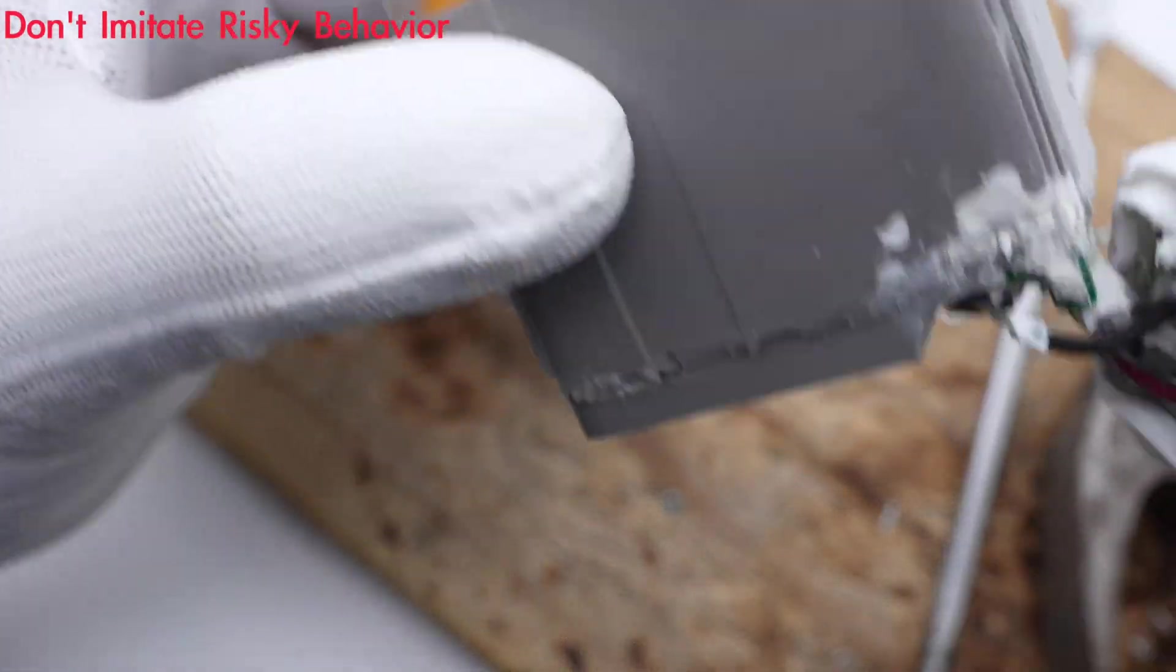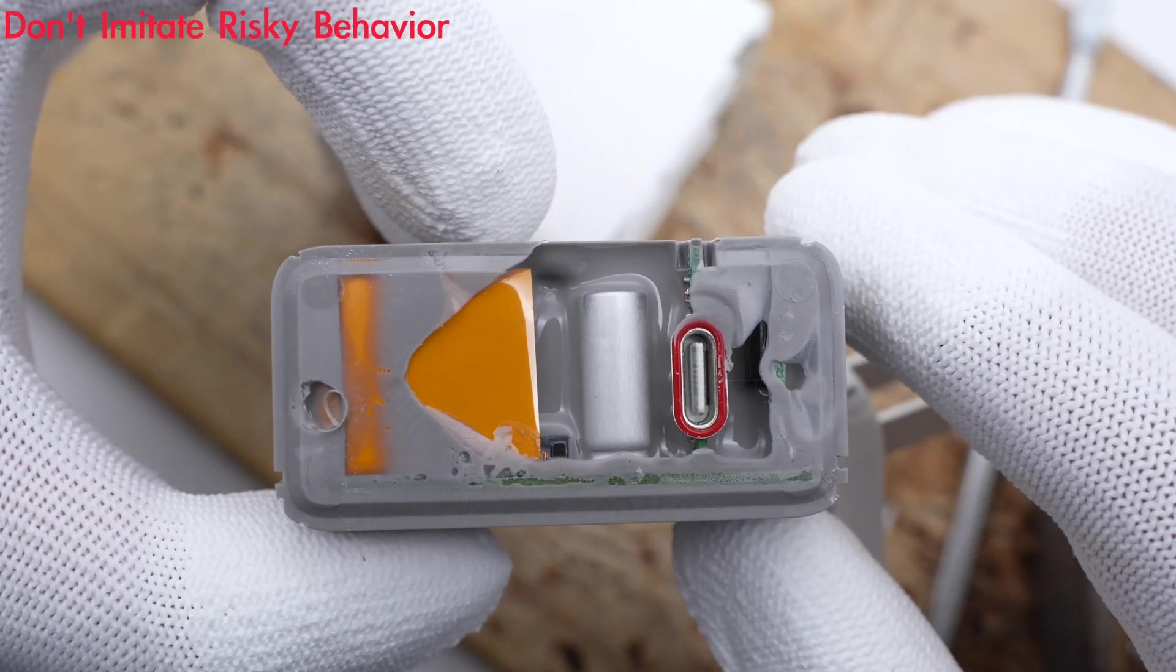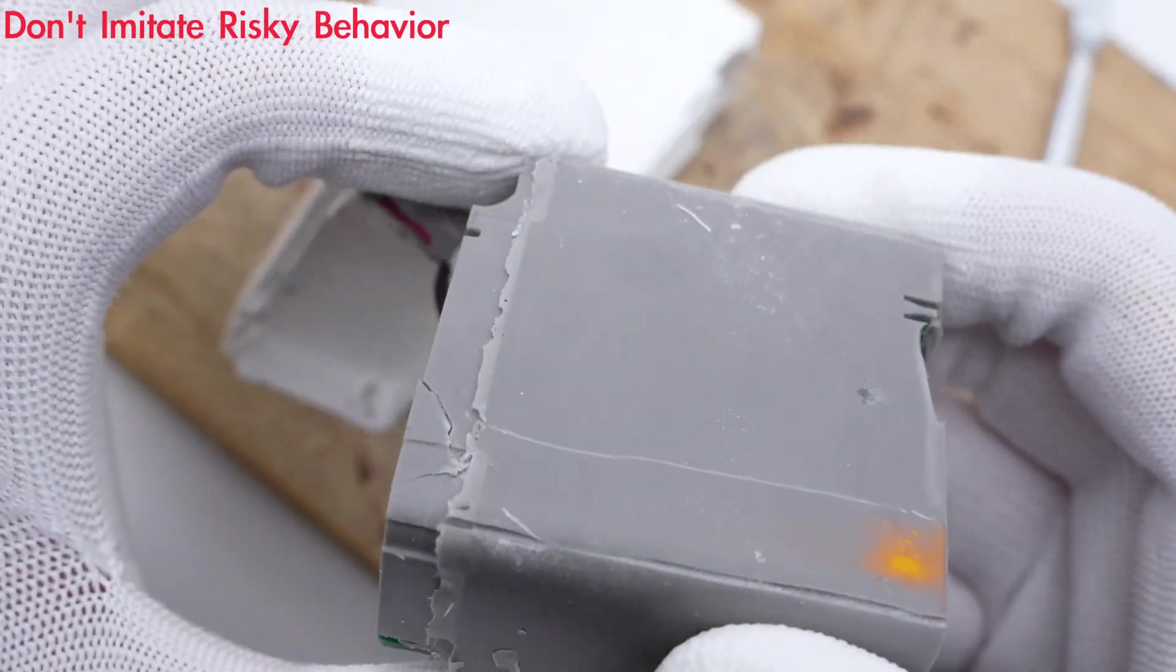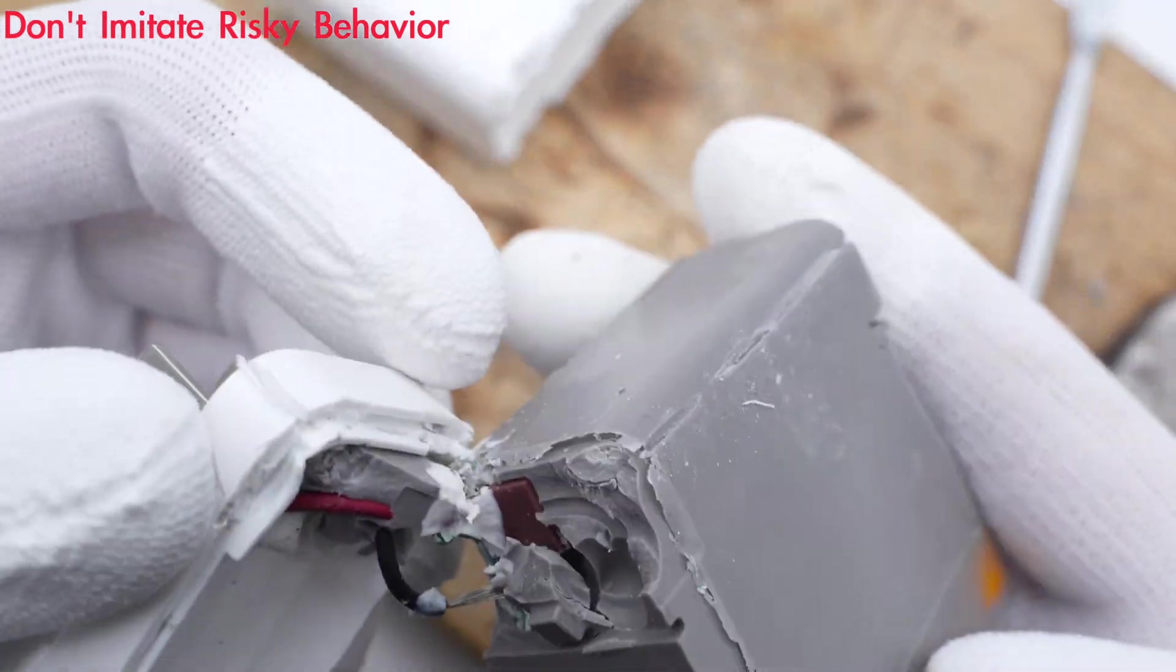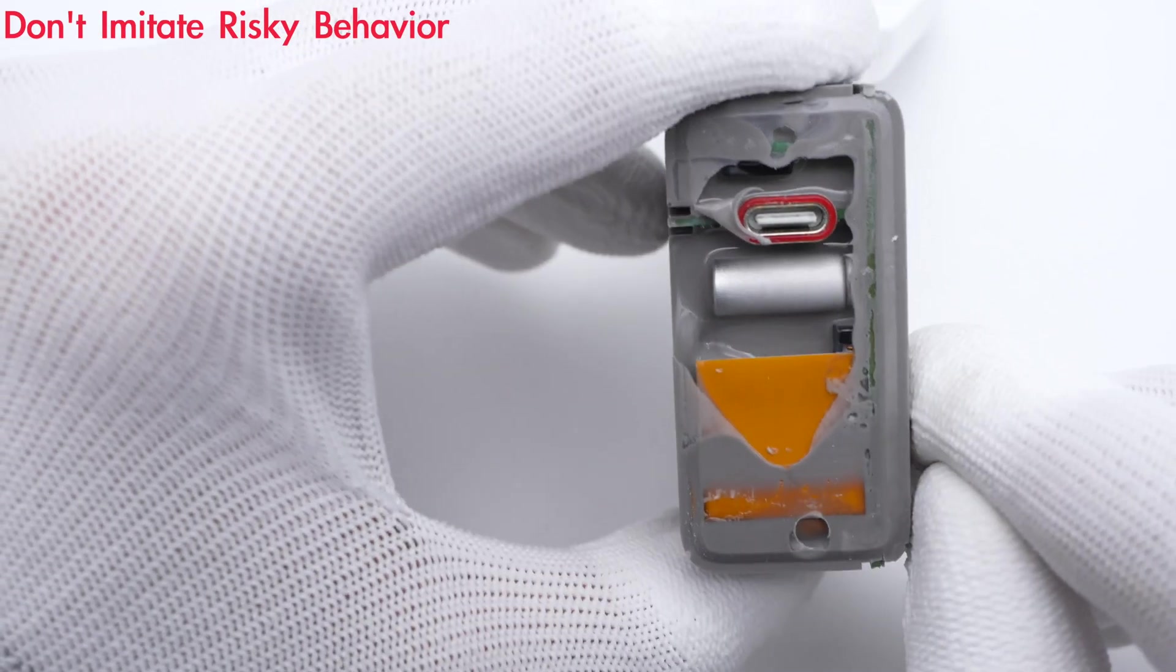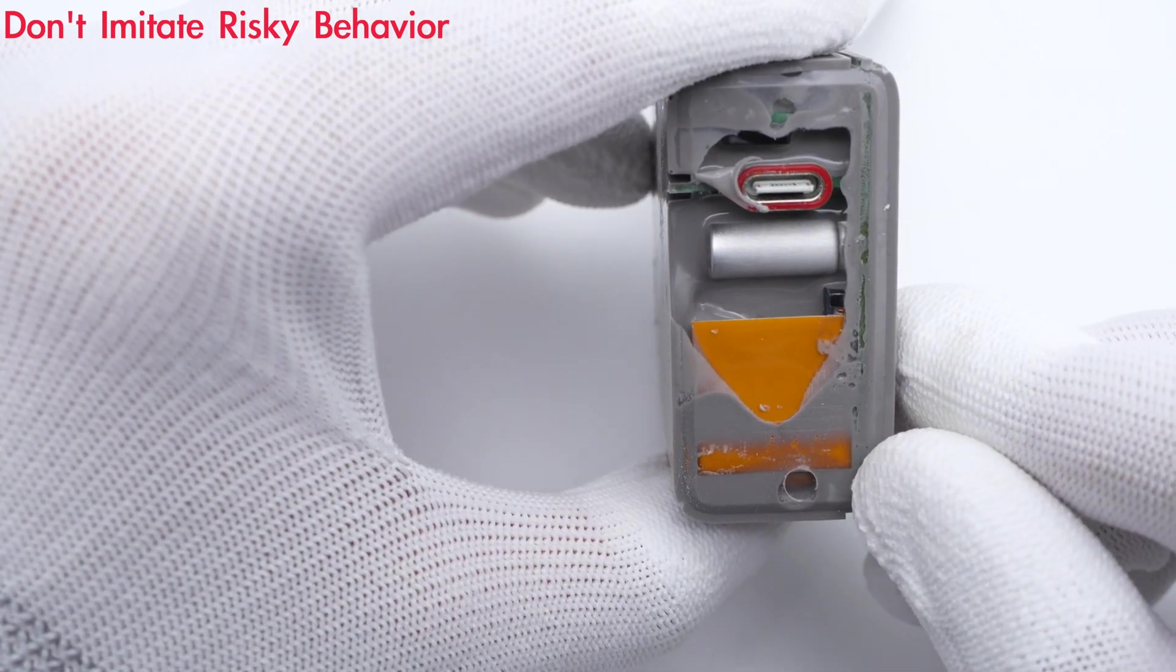Take out the entire module. We found it's covered by grey potting compound, which can facilitate heat dissipation performance. The red and black wires are connected to here. Turn to the other side. It has solid capacitor and USB-C connector.